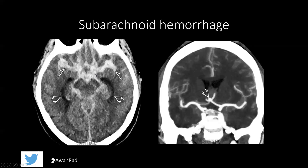Subarachnoid hemorrhage should be thought of as blood within the sulci or the cisterns. This star-shaped cistern is known as the suprasellar cistern — it should normally be dark like CSF, but here it's bright because it's totally filled with blood. This smiley-face cistern is known as the quadrigeminal plate cistern and also contains subarachnoid hemorrhage. Linear areas of bright density within sulci also represent subarachnoid hemorrhage. Any hemorrhage within sulci or cisterns is subarachnoid hemorrhage.